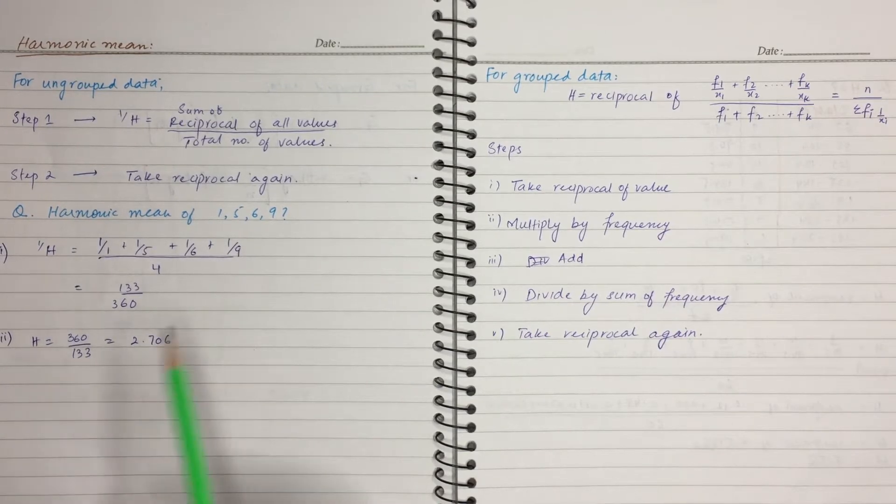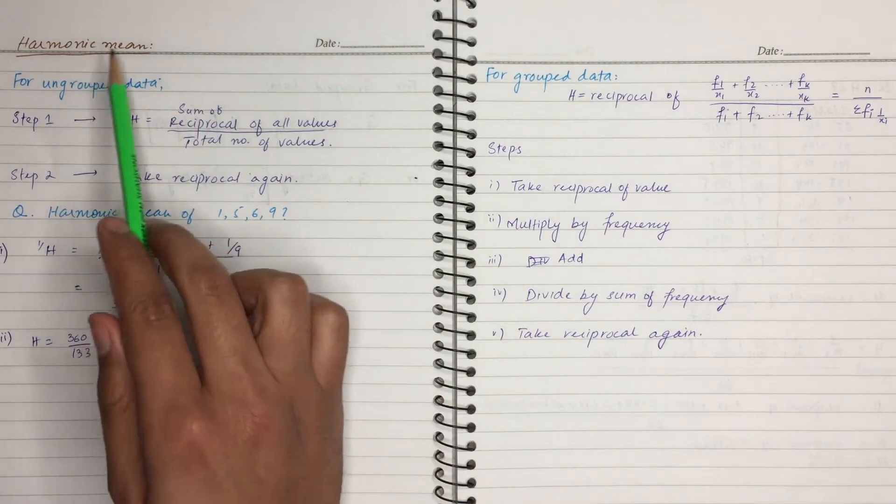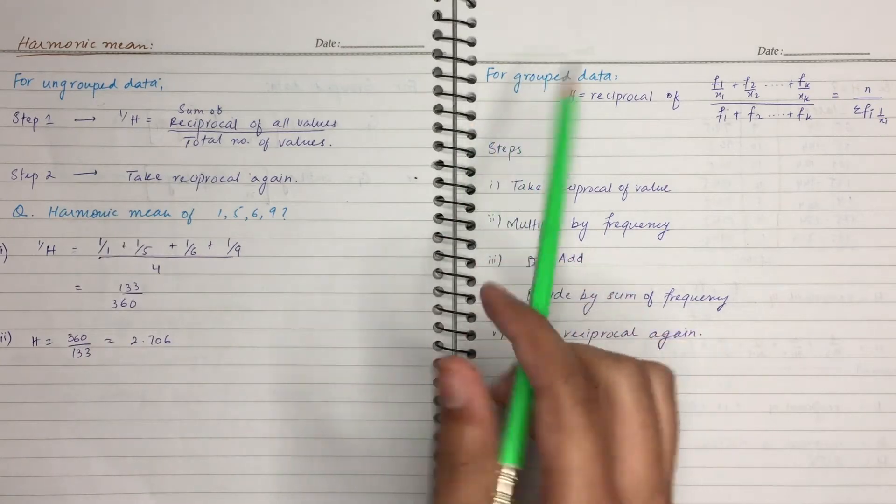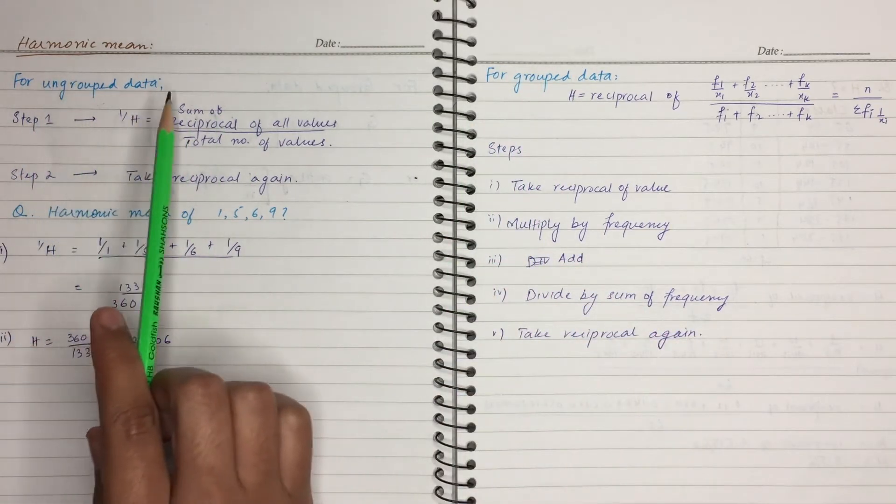In this video I am going to talk about harmonic mean. Harmonic mean is different for ungrouped data and grouped data. There are two steps that we have to find harmonic mean.